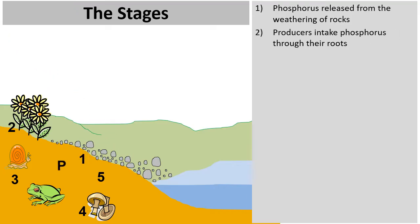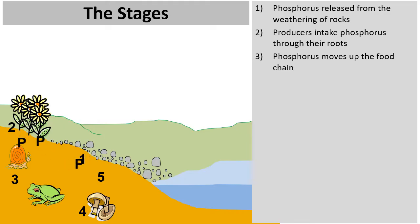Once phosphorus is in the soil, we can focus on area two of the diagram. The phosphorus is taken into producers — plants — through the roots, and now it just moves up the food chain. Into the plant, then into the snail, then from the snail into the frog, and whatever organisms might be in this environment. The phosphorus just moves up the food chain.